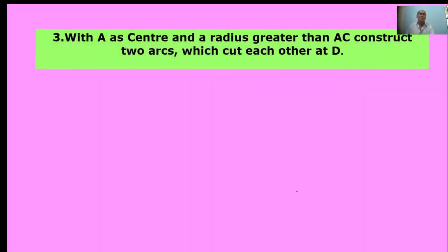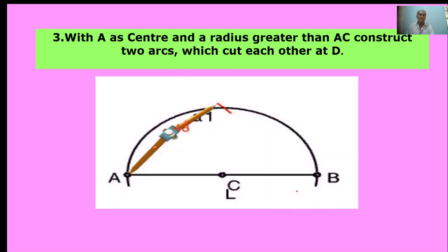With A as a center and radius greater than AC, construct two arcs which cut each other at D. Here, A is the center. Take more than AC length as radius and draw an arc. This is called A1.